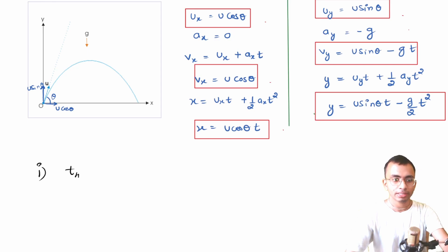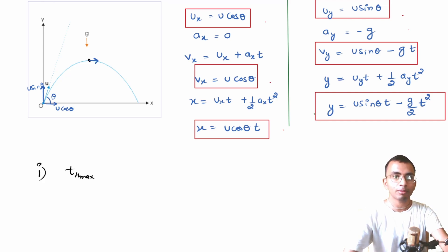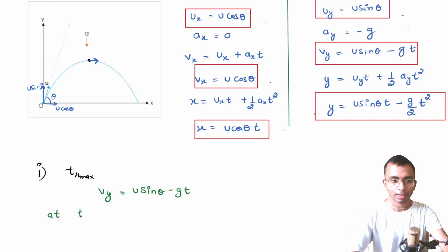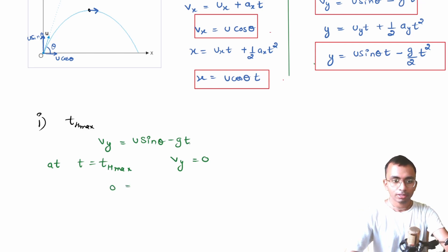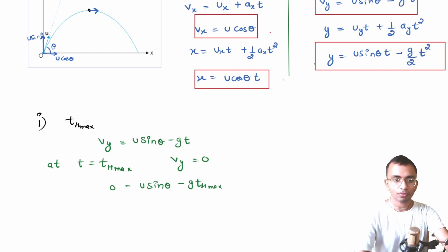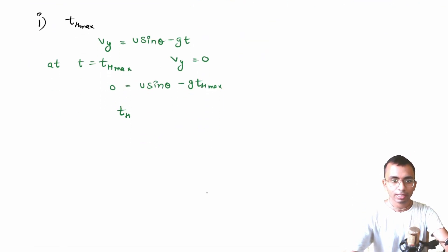Finding time of maximum height, t_hmax — it is the time this particle takes to reach the highest point. We know that when the particle reaches the highest point, it is moving only horizontally, so the velocity along the y-axis becomes zero. From the table, v_y = u sin theta minus g·t. At t = t_hmax, v_y = 0. So 0 = u sin theta minus g·t_hmax, giving us t_hmax = u sin theta / g.